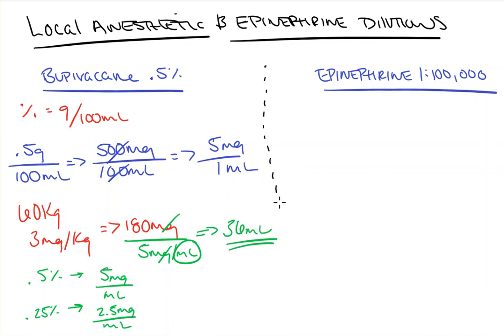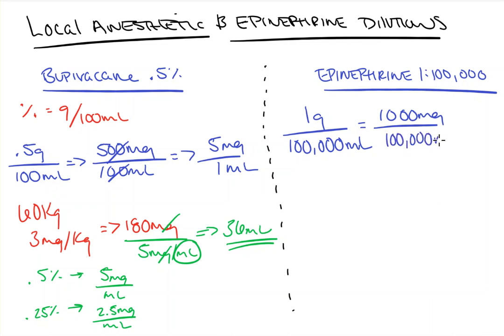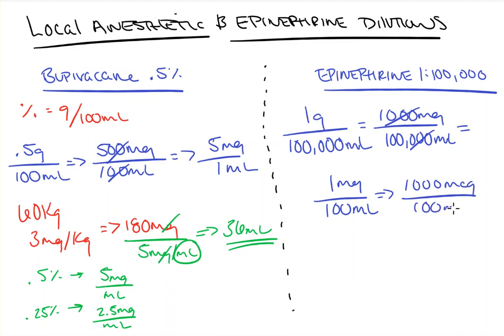Next, the same concept applies to epinephrine when you see dilutions like 1 to 100,000 or 1 to 200,000. The notation 1 to 100,000 means 1 gram per 100,000 ml. That translates to 1,000 mg per 100,000 ml, which simplifies to 1 mg per 100 ml, then to 1,000 micrograms per 100 ml, and finally to 10 micrograms per ml for a 1 to 100,000 dilution.